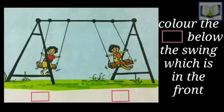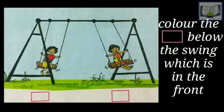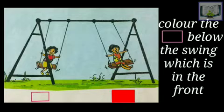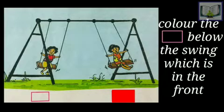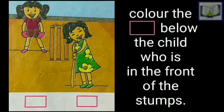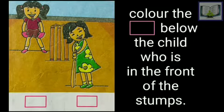Let's see another example — color the square below the swing which is in the front. Which swing is in the front? Front matlab saamni hai, aage hai. Yes, right — she is in front, and the other one is behind. Clear, everyone?